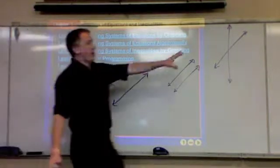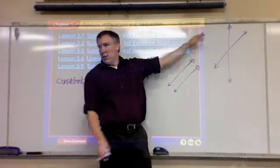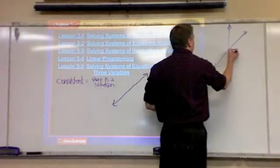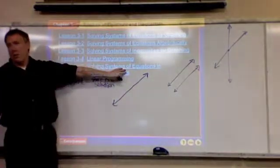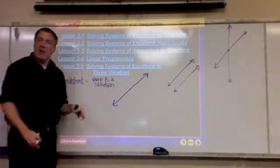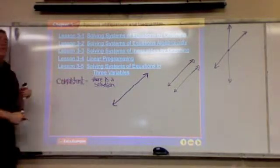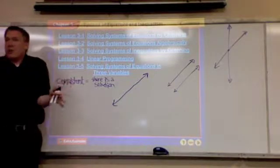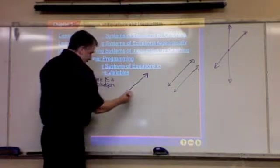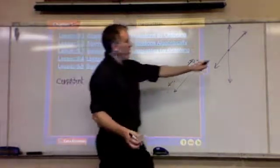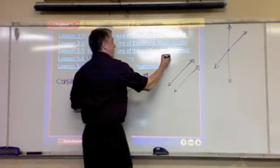Does the crossing scenario have a solution? Yes — the point where they intersect is the solution. Do parallel lines have a solution? No. What about the same line on top of itself? Yes, infinitely many. Consistent means they cross at least somewhere. The crossing scenario and the overlapping scenario are both consistent. The parallel one is inconsistent.